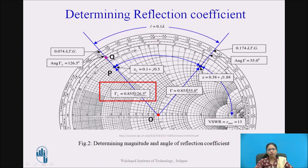Here you can see the center of the chart O and the impedance point P. Extending this line outward and marking point Q at the last Xn circle, the ratio of length OP to length OQ gives the magnitude of the reflection coefficient. Reading the angle from the angle of reflection coefficient circle gives 126.5 degrees. So the reflection coefficient is 0.855 at an angle of 126.5 degrees — this is by Method 1.